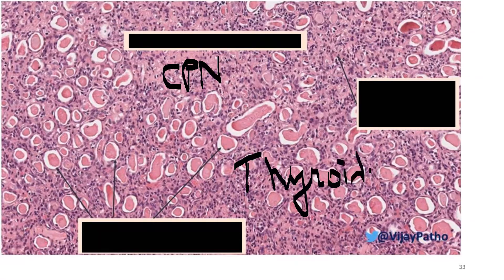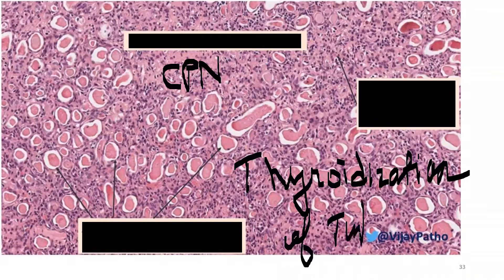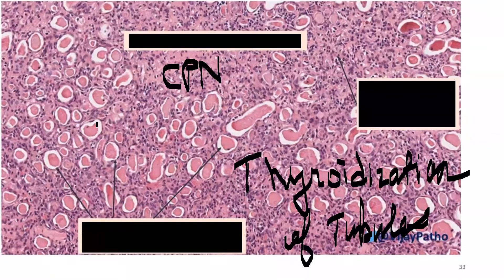This is a frequently asked slide showing chronic pyelonephritis (CPN). The characteristic finding is thyroidization of tubules — tubules filled with colloid-like casts resembling thyroid follicles. This is the condition of thyroidization of tubules seen in chronic pyelonephritis, and is an important spot diagnosis.